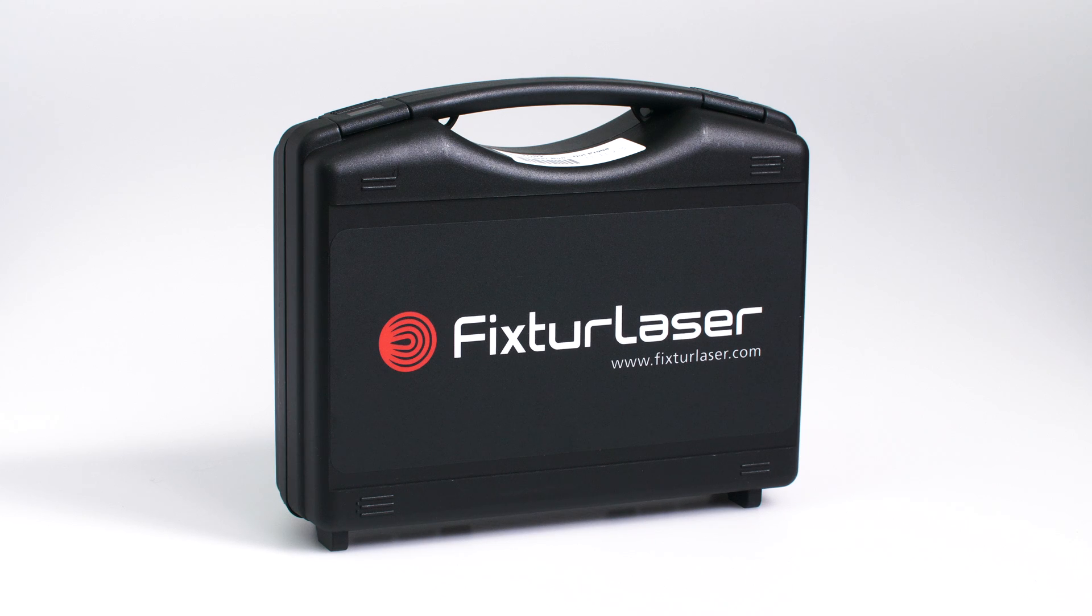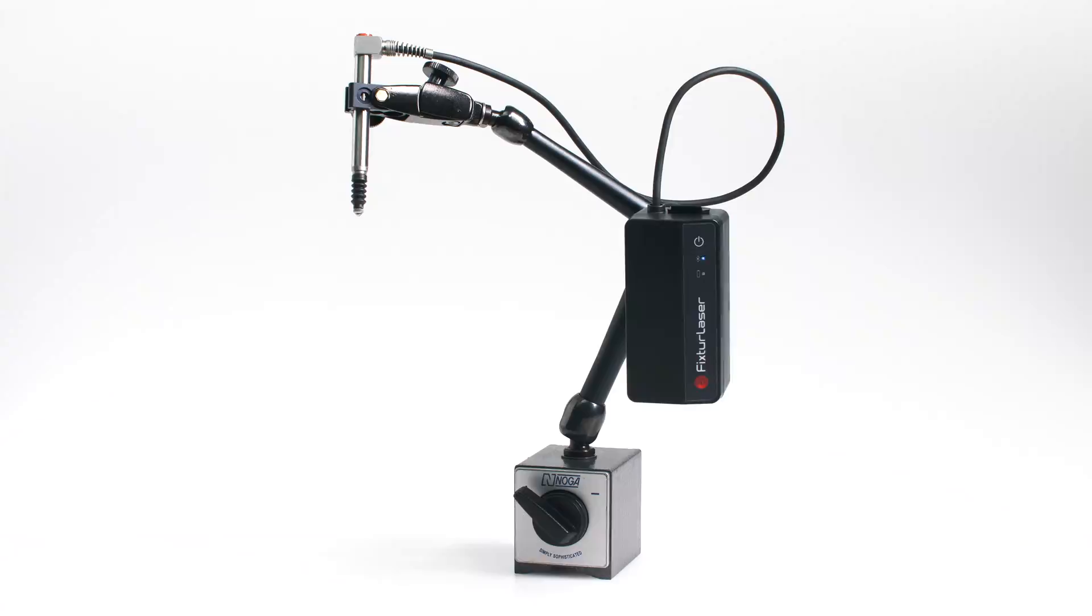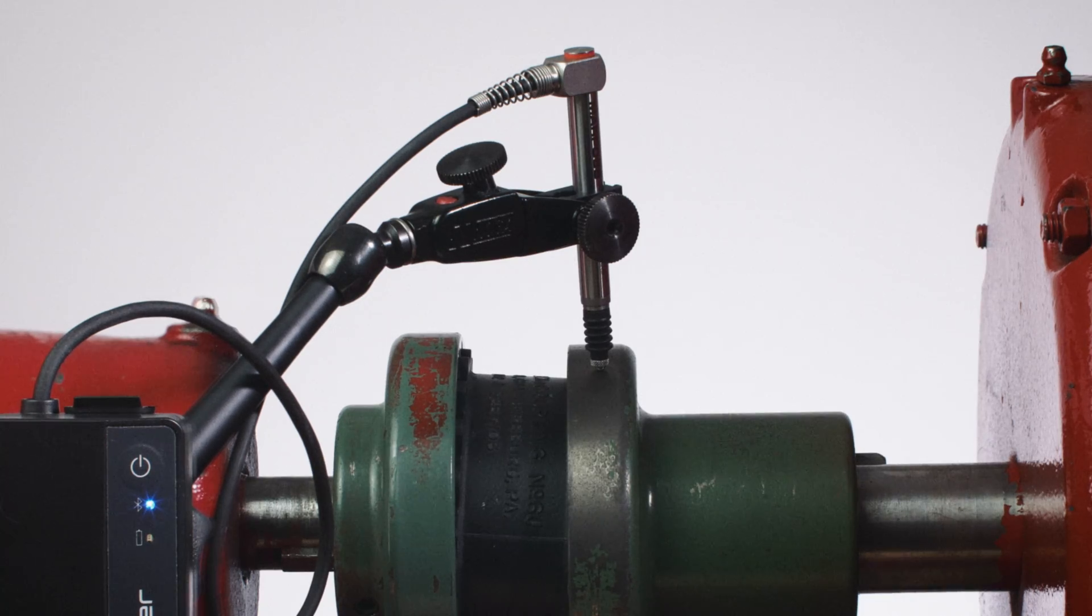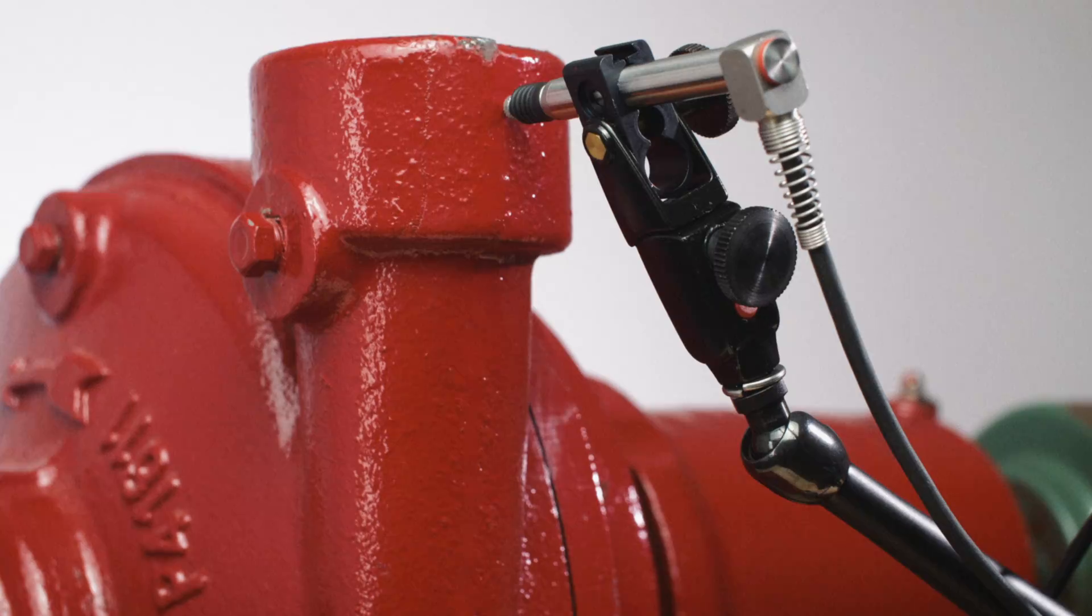The Fixture Laser Runout Probe comes in its own carrying case which includes the sensor, Bluetooth unit, and an articulated arm attached to a magnetic base. The arm is designed so the user can position the sensor as needed to take measurements from the coupling, the shaft, and the pipe flange.